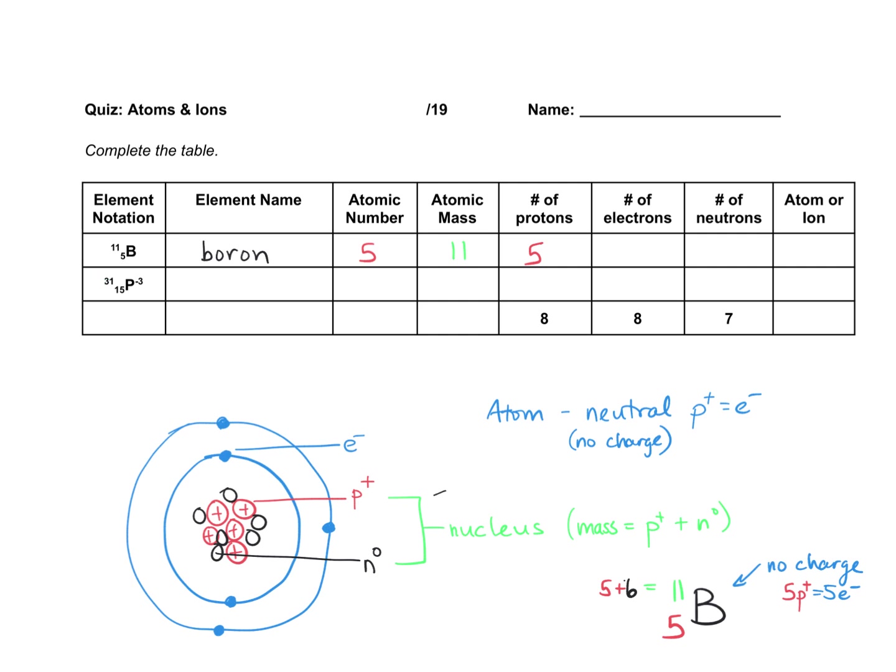And the neutrons. How am I going to figure out the neutrons? Well, the mass is 11. And this number, the 5, plus this number has to equal 11. So if I just subtract them, if I subtract the mass minus atomic number, that'll give me the number of neutrons. So 11 minus 5 is 6, so we have 6 neutrons.